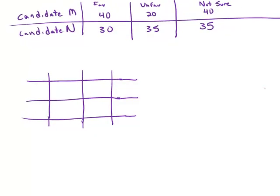The table above shows the results of a survey of 100 voters who each responded favorable, unfavorable, or not sure when asked about their impressions of candidate M and candidate N. What was the number of voters who responded favorable for both candidates?